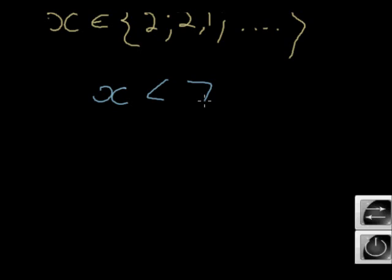x is less than 7. And I want to do something. I now want to say, okay, if x is less than 7, what will happen if I double x? So if I multiply this with a 2, then 2x will be less than what? 14.